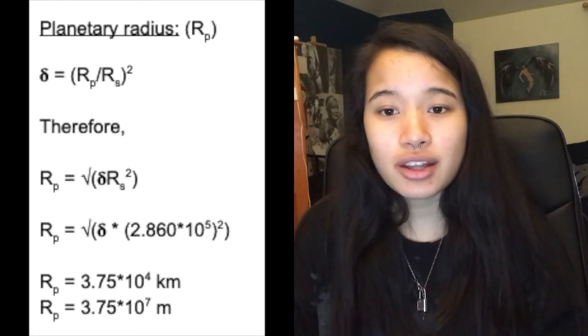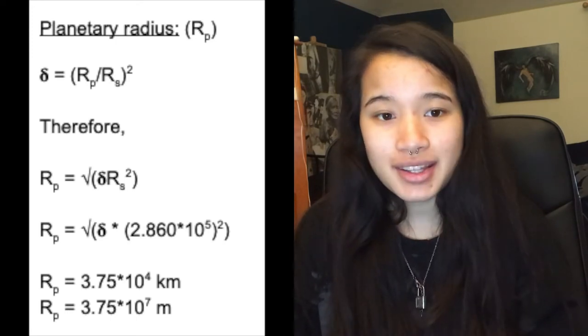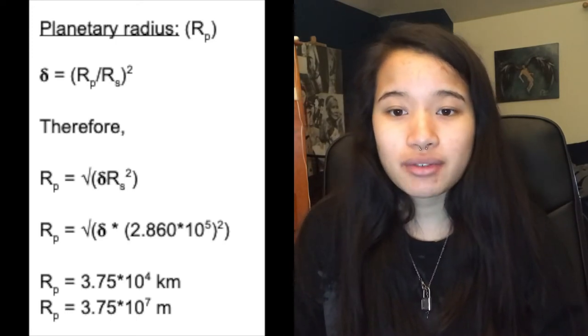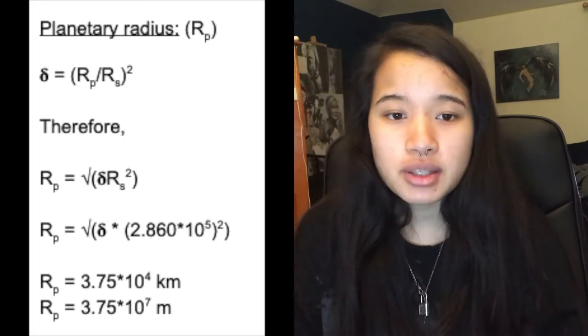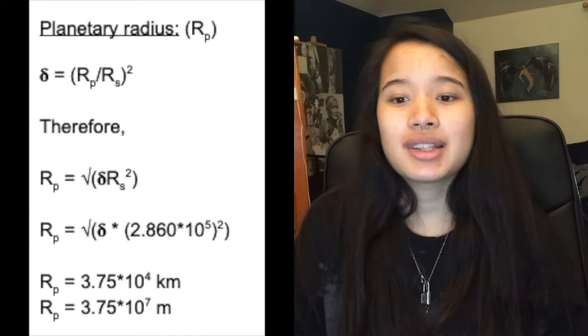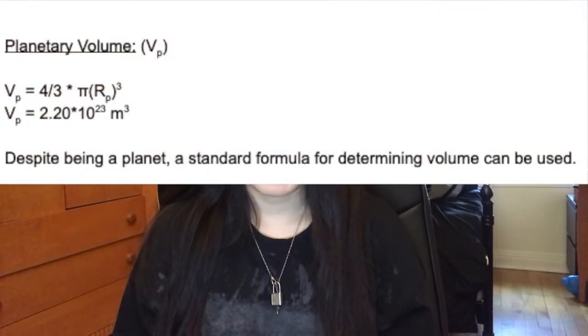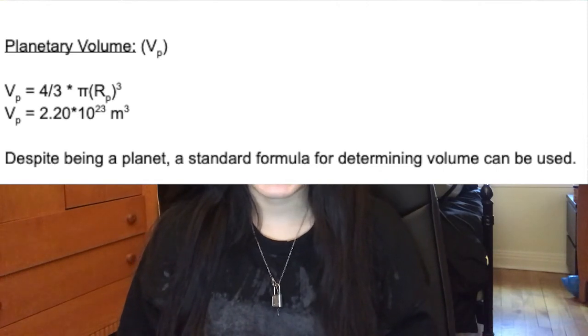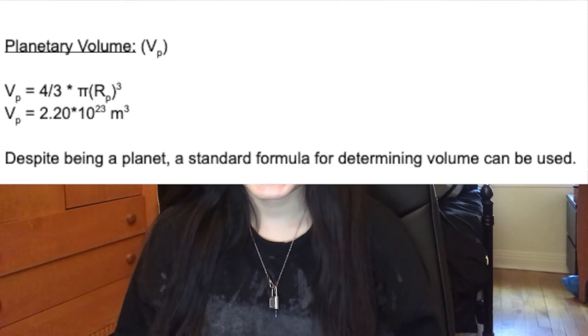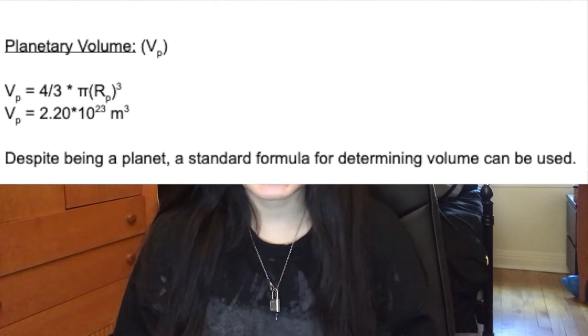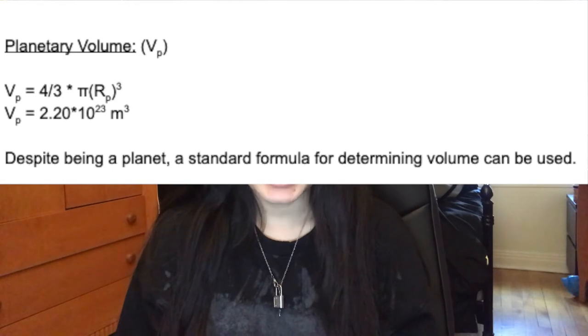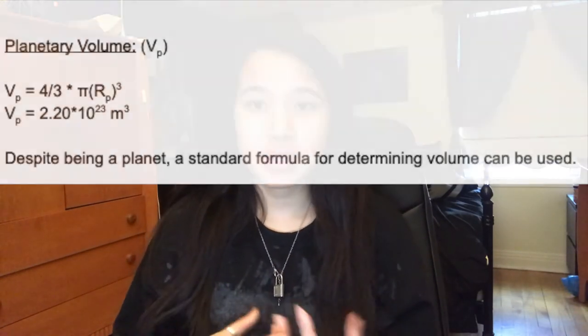By using the difference in luminosity that reaches the measurement device while the exoplanet is between the star and the measurement device — in conjunction with the radius of the star — it is possible to determine how much light the exoplanet blocks. This data can then be extrapolated to determine the radius of the exoplanet. The volume of a planet is how much three-dimensional space it occupies. To calculate the planetary volume, we use: volume equals 4/3 multiplied by π and the radius of the planet cubed. This gives units of meters cubed, and despite being a planet, the standard formula for determining volume can be used.